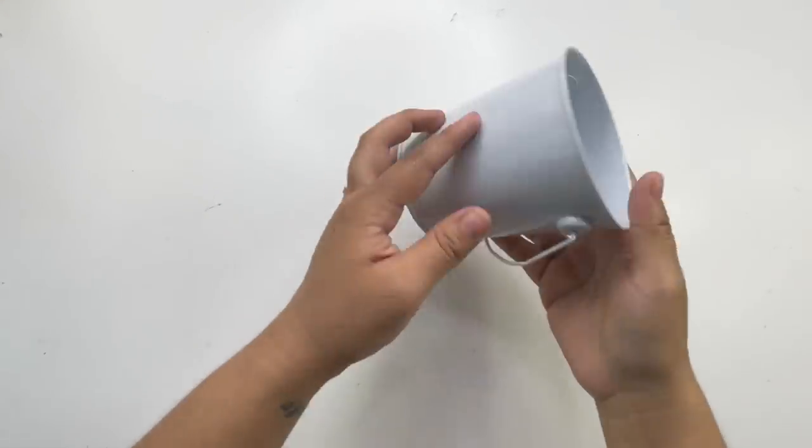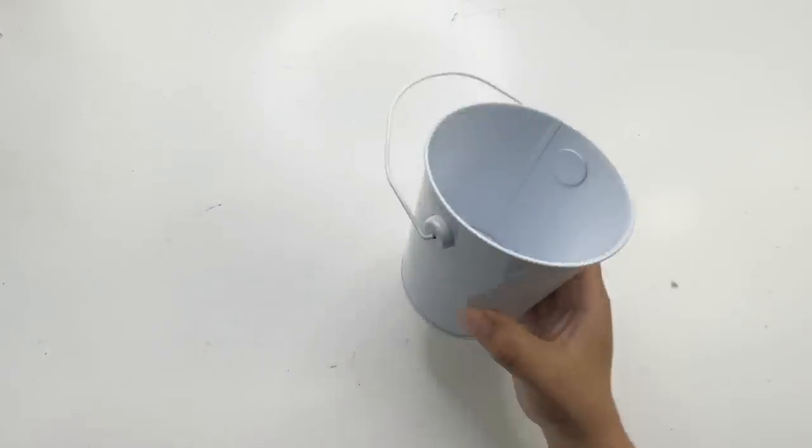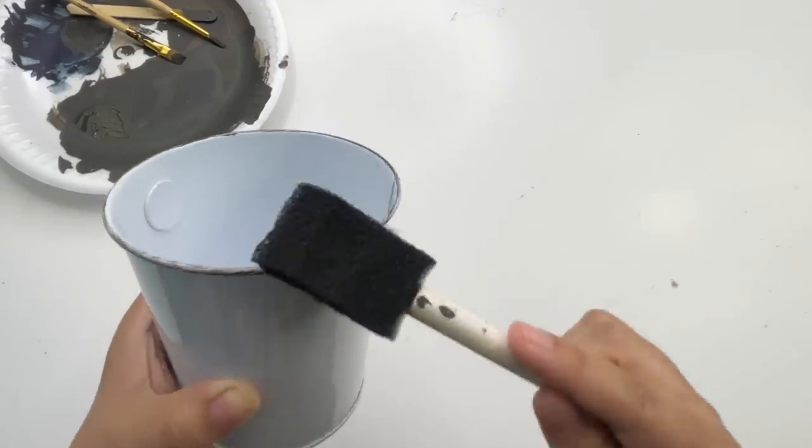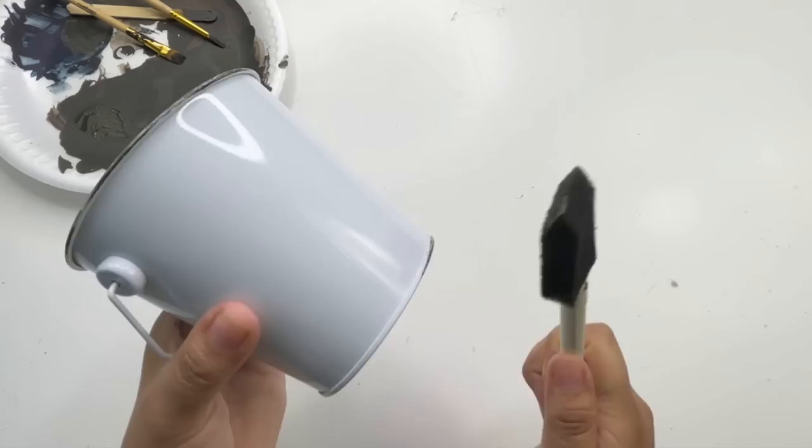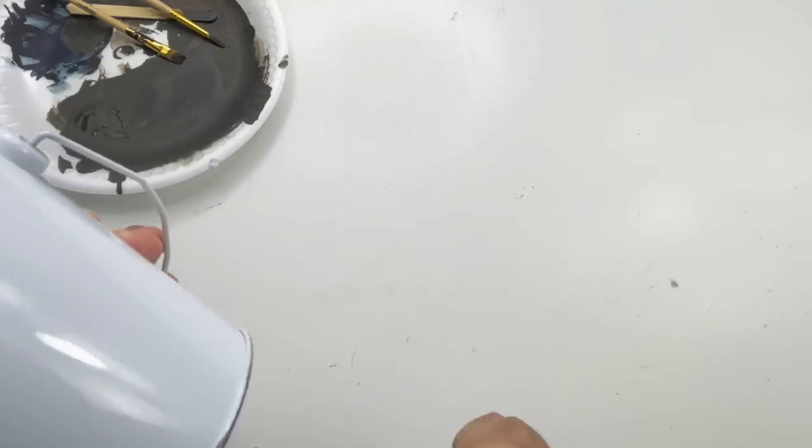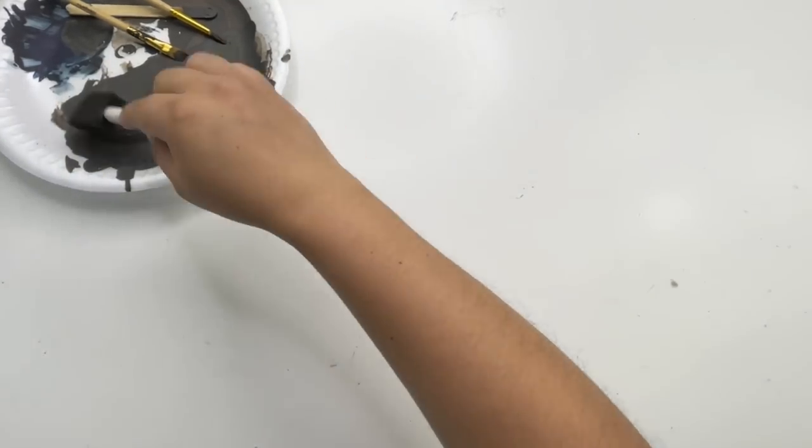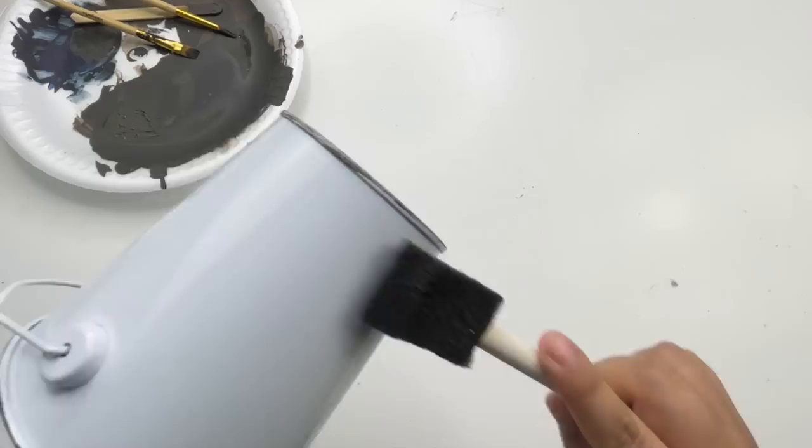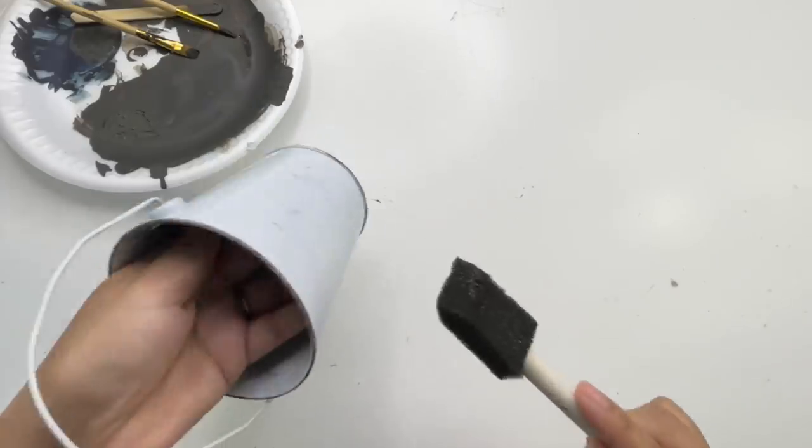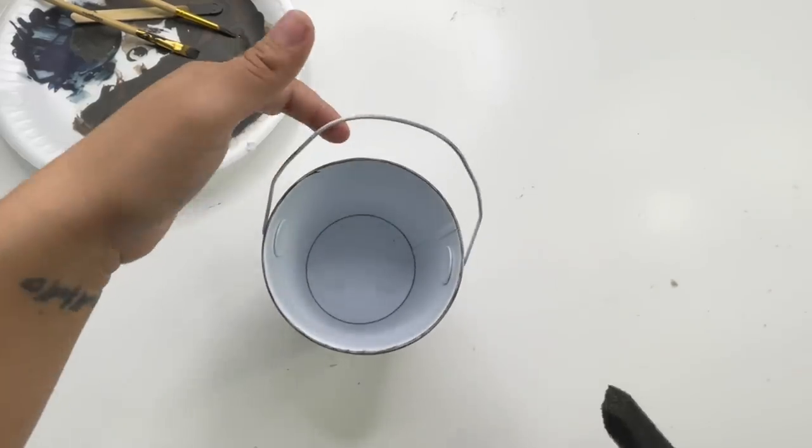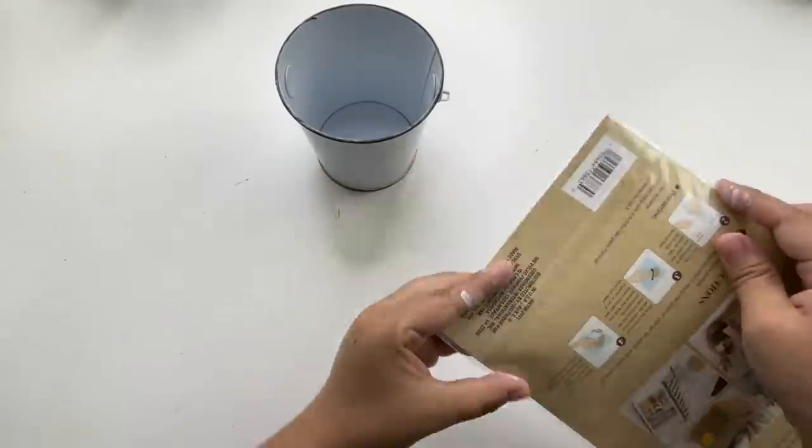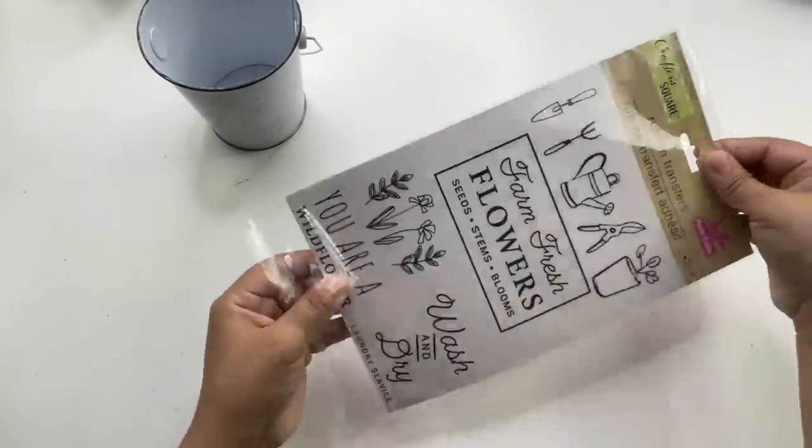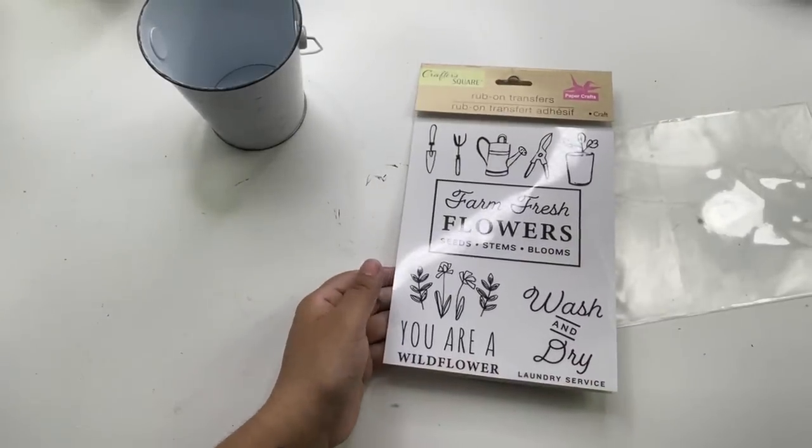All right, moving on. From Dollar Tree I'm using this white bucket that I found in the party aisle. Using a Dollar Tree sponge paint brush, I'm using the rest of the paint and painting the top and bottom and distressing this. Once this is dry, I'm adding the little sticker and look how beautiful these rub-on transfers are. I'm using the one that says you are a wildflower.